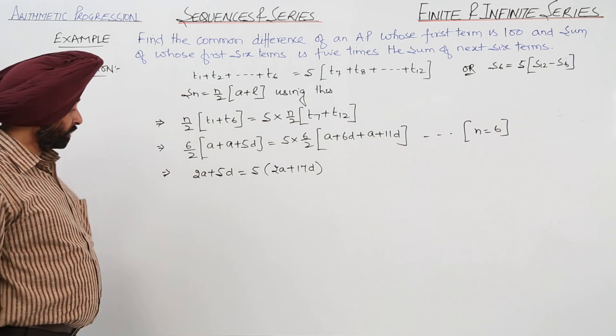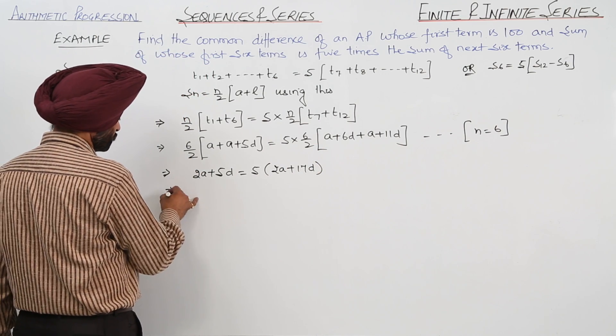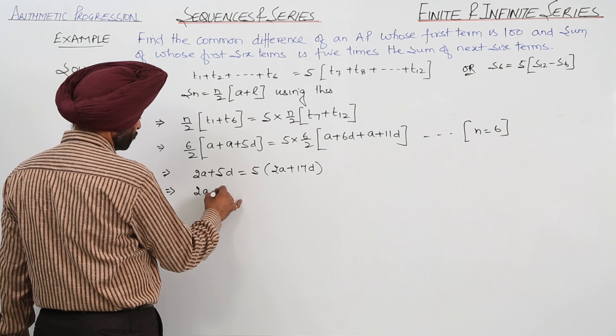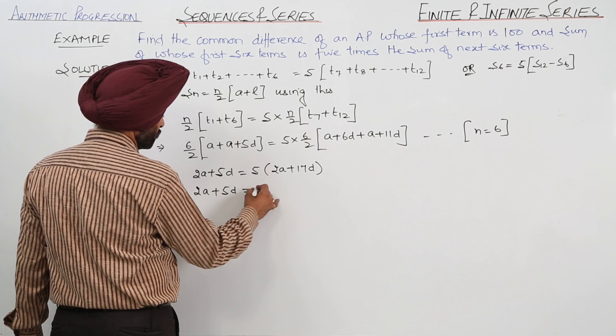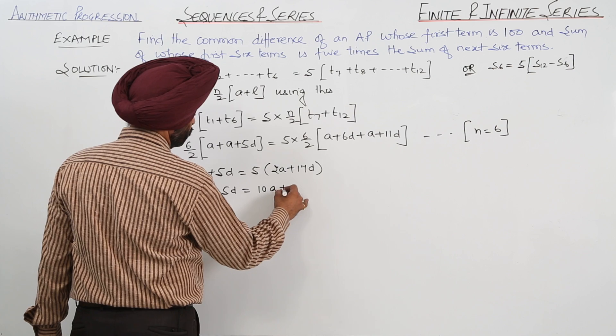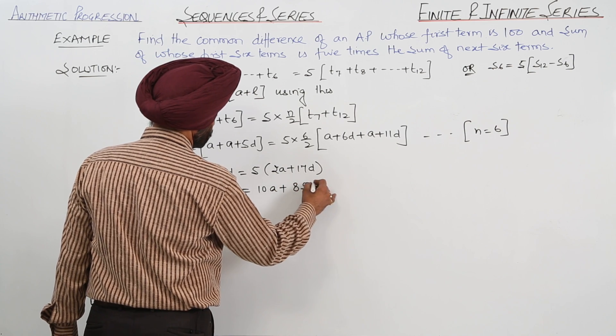2A plus 17D. 6 by 2 and 6 by 2 cancels. Now this is 2A plus 5D is equal to 10A plus 85D.